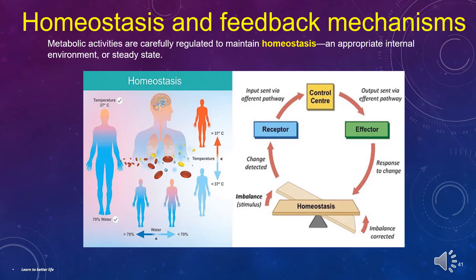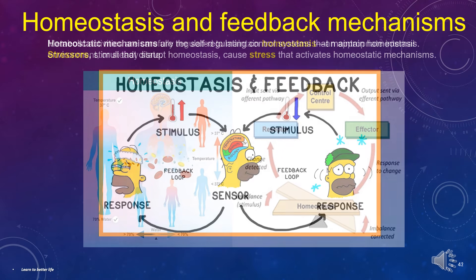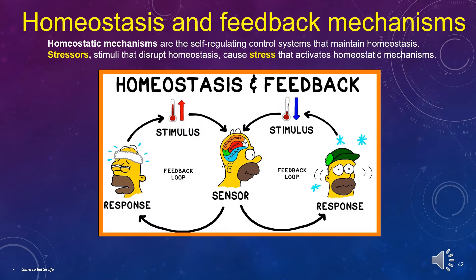Homeostasis and feedback mechanisms. Metabolic activities are carefully regulated to maintain homeostasis, an appropriate internal environment, or steady state. Homeostatic mechanisms are the self-regulating control systems that maintain homeostasis. Stressors — stimuli that disrupt homeostasis — cause stress that activates homeostatic mechanisms.